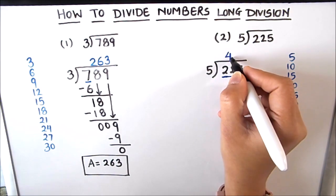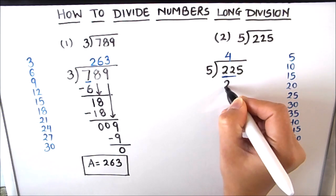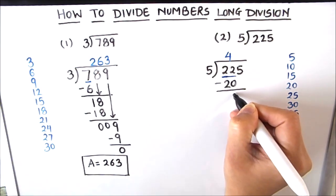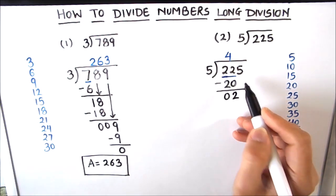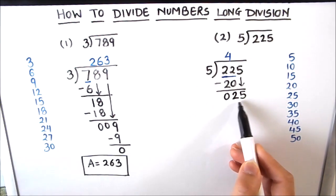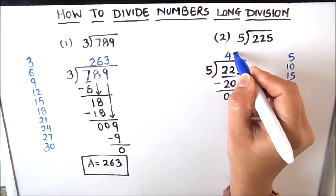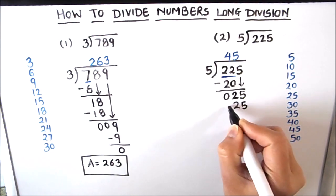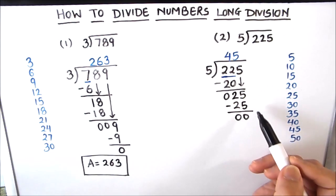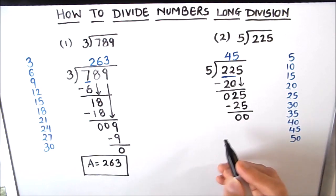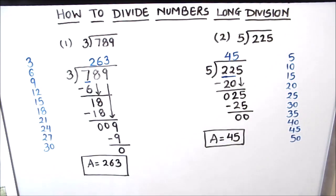5×4=20. We write 4 in the quotient and 20 just below 22, then subtract: 22 minus 20 is 2. We see there is still one more number to divide, so we drop down the next number 5. Now our dividend is 25 and we divide 25 by 5: 5×5=25. We write 5 in the quotient and 25 below 25, then subtract. There are no more digits left and we have divided the number fully — our final answer is 45. We will box the answer.